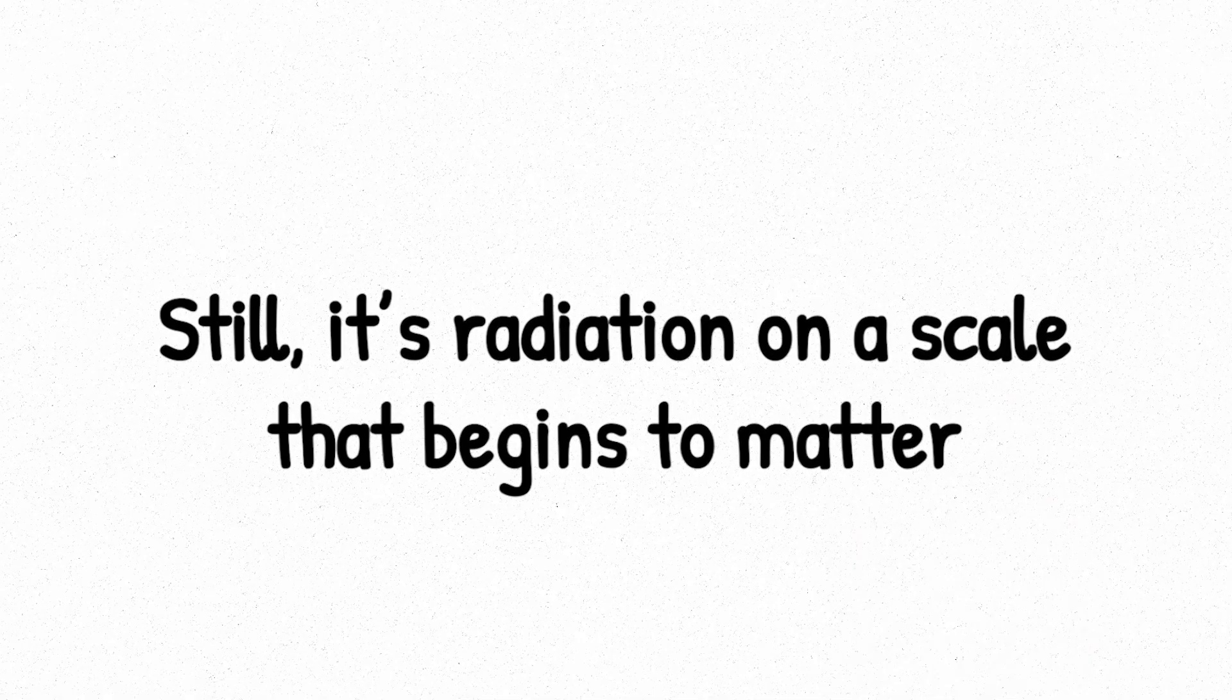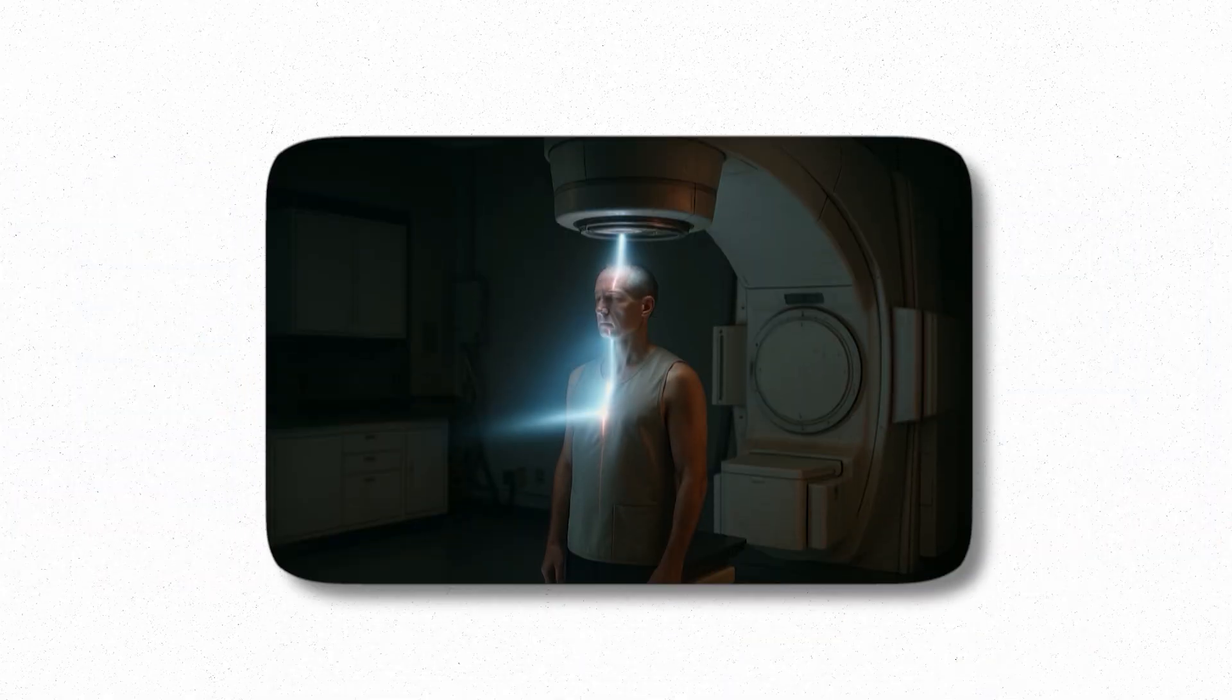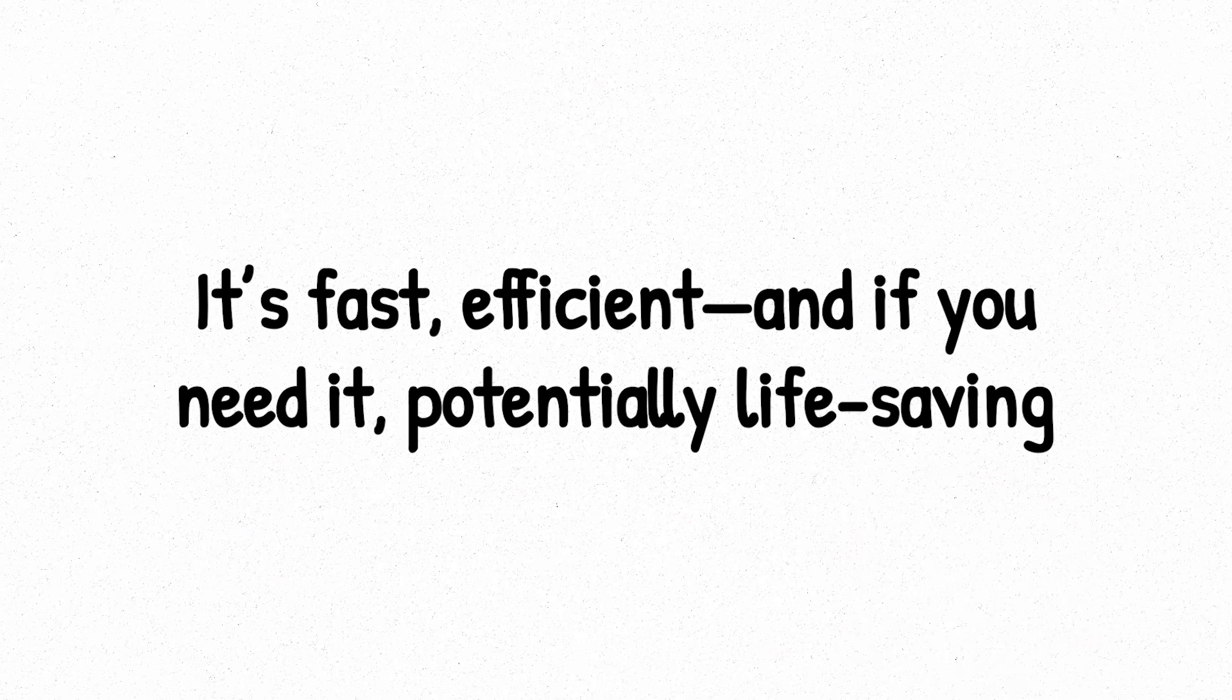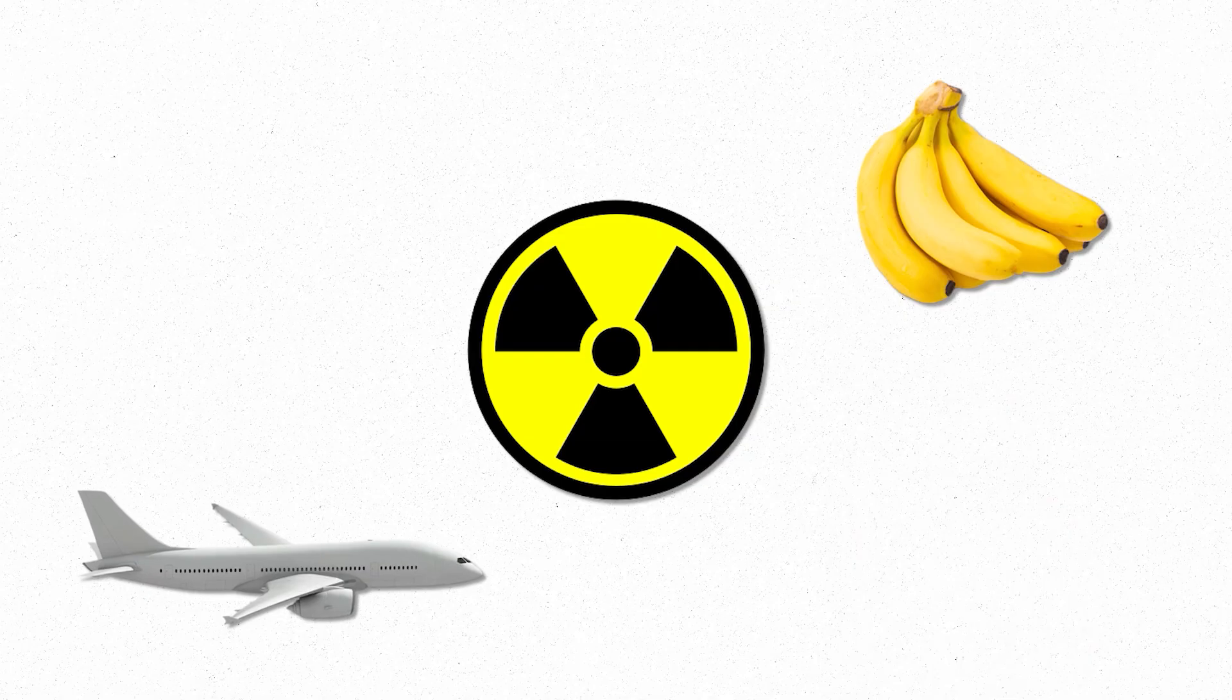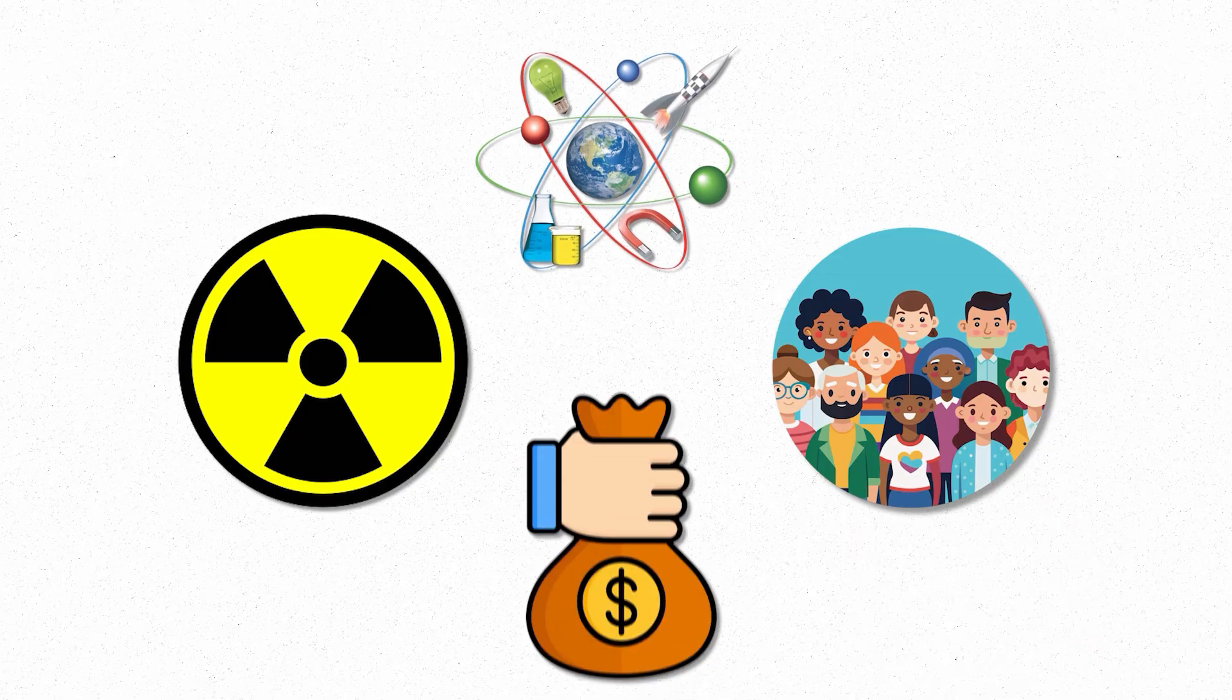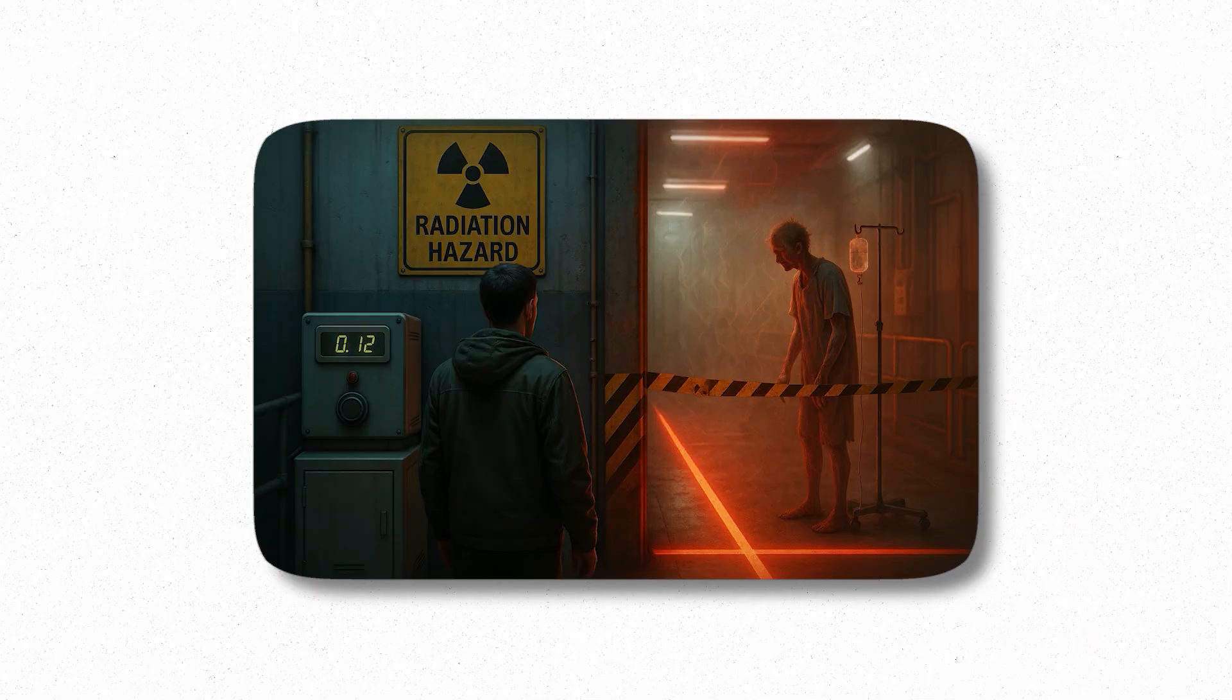Still, it's radiation on a scale that begins to matter. Imagine walking through an airport scanner. Now imagine standing in a room where a machine concentrates that energy into your chest, abdomen, or brain. It's fast, efficient, and if you need it, potentially life-saving. But unlike the scattered radiation in food or on airplanes, this is focused. Direct. Measured in millisieverts instead of microsieverts. We're still well below danger, but we've crossed a psychological line. Radiation is now something we aim at ourselves, trusting the science, hoping the benefits outweigh the cost. Because just beyond this level, the cost stops being theoretical and starts becoming physical.